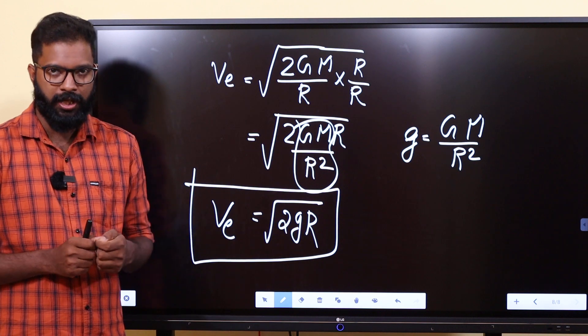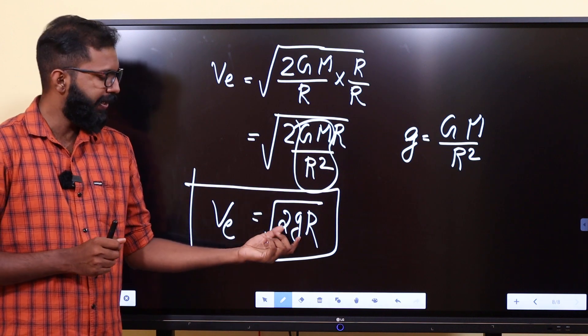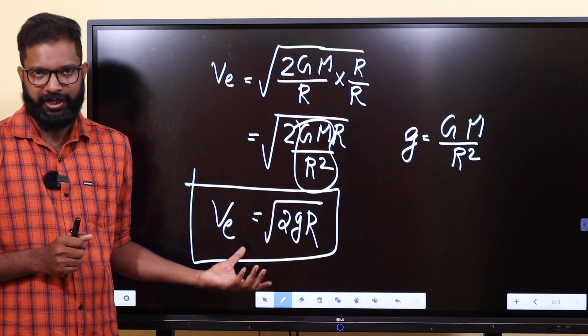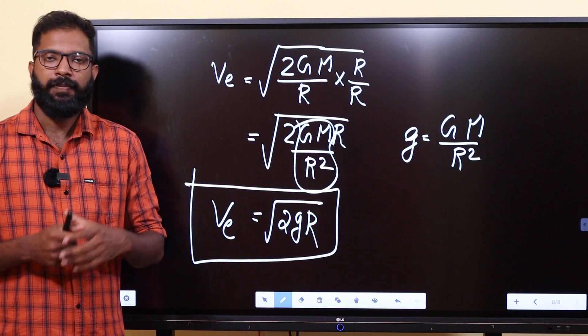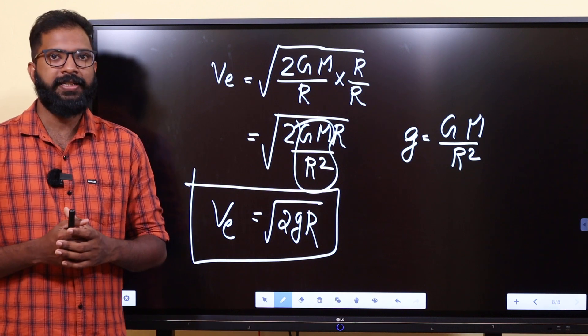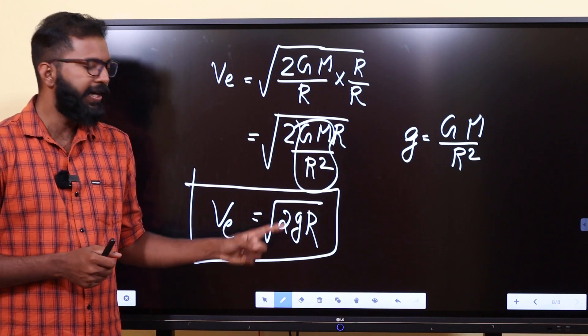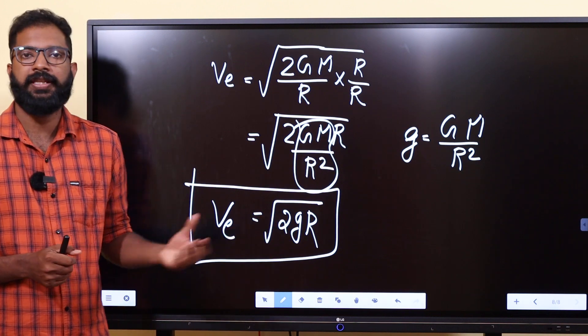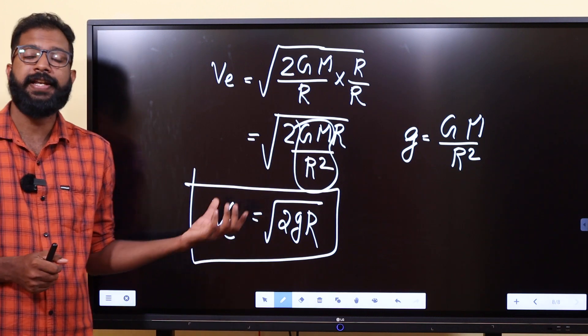We can calculate it using the radius and the surface gravity of a body — for example, the Moon. We can calculate the radius and gravity of the Moon to find its escape velocity.